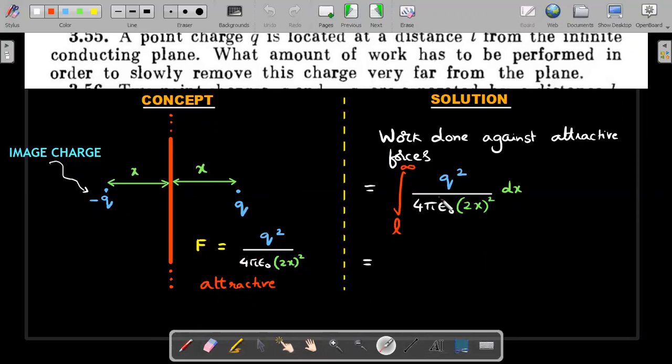That work you can calculate as integration of fdx as x varies from initial value L to final value infinity. It's a very simple integration. Solving this, it comes out to be q²/(16πε₀L). Not a difficult task at all.